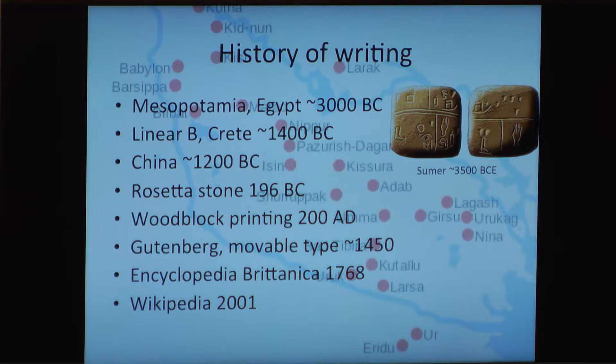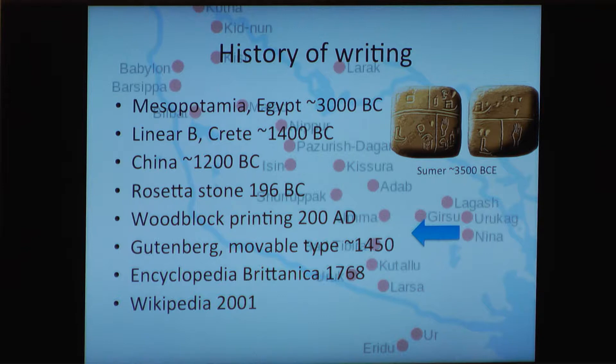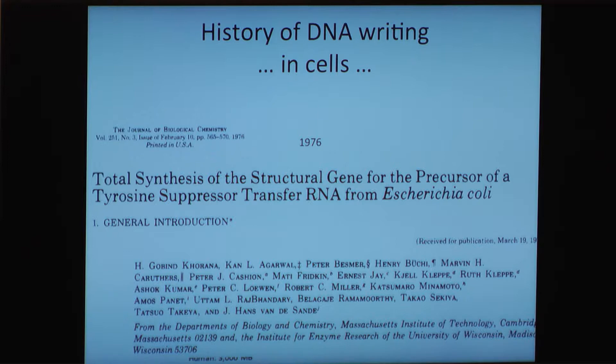I can't resist telling you a little bit about the history of writing. It goes way back. George will tell you he's already encoded an entire movie in DNA, pixel by pixel. But when we talk about DNA writing in cells, we're kind of in a Gutenberg phase — we can write millions of letters of DNA, but that's about it. We have a long ways to go; we're just at the very beginning of this project.